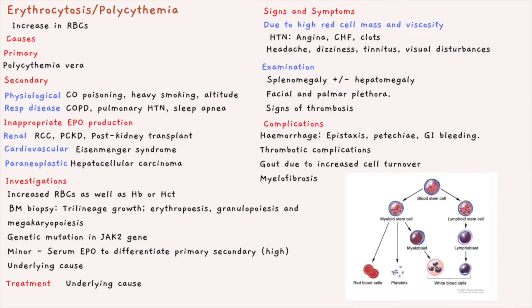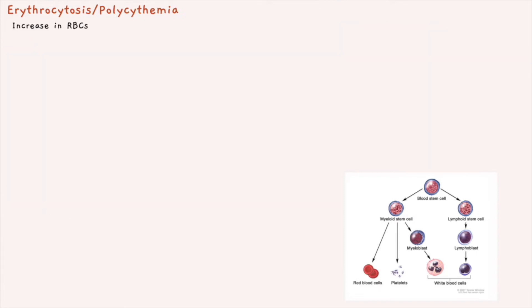Welcome back to Midnight Med. This video is on erythrocytosis, or polycythemia. Erythrocytosis is when there are increased red blood cells, which are formed in the bone marrow. We have a quick diagram here to explain the origins of each of the bone marrow cells.